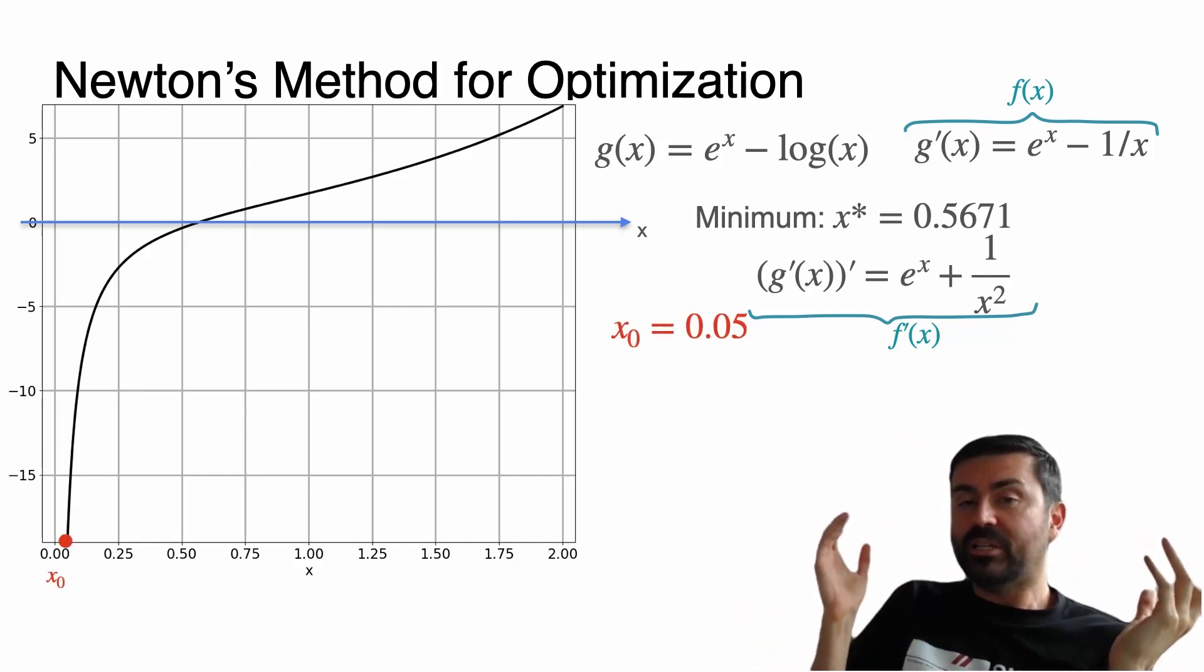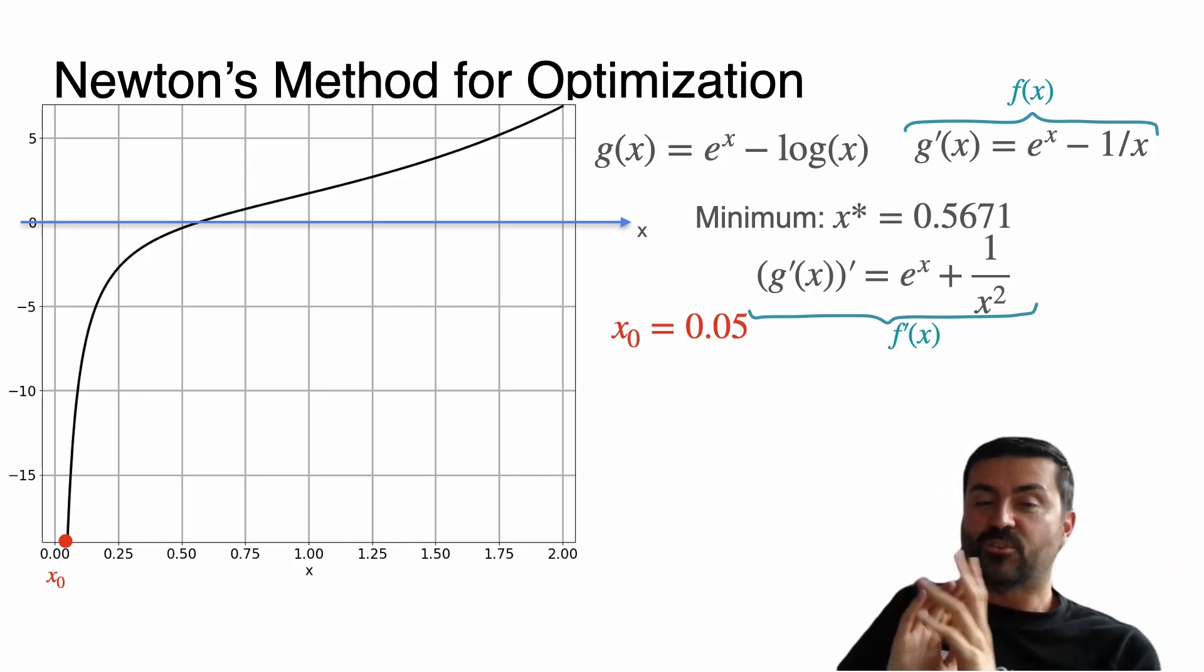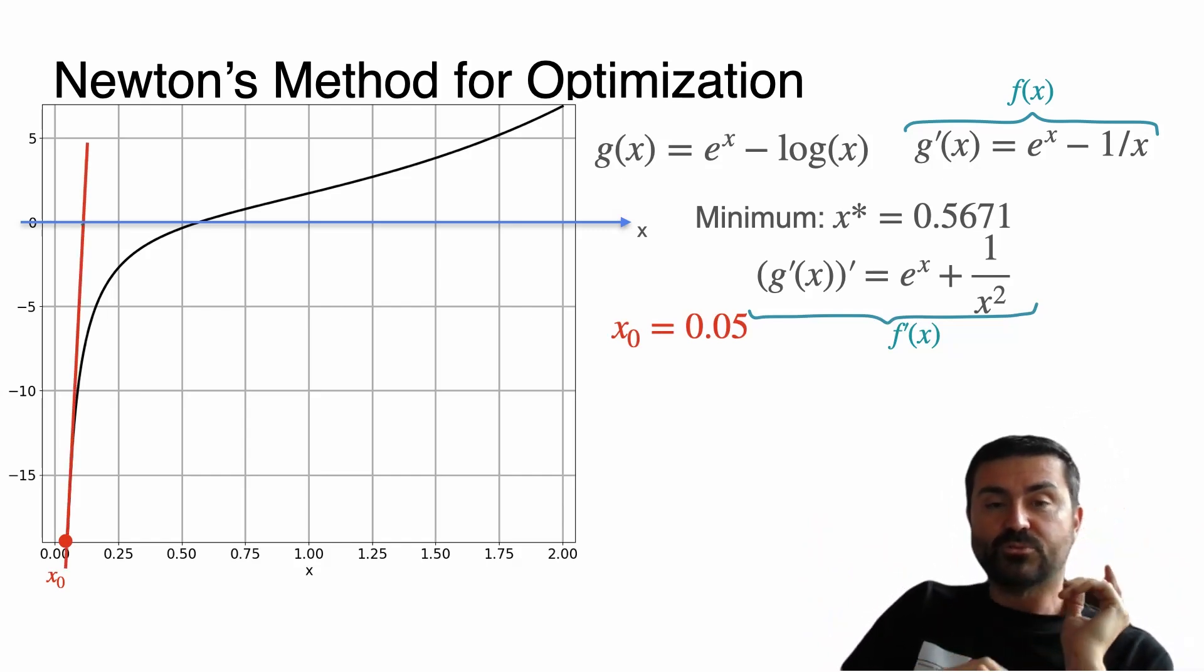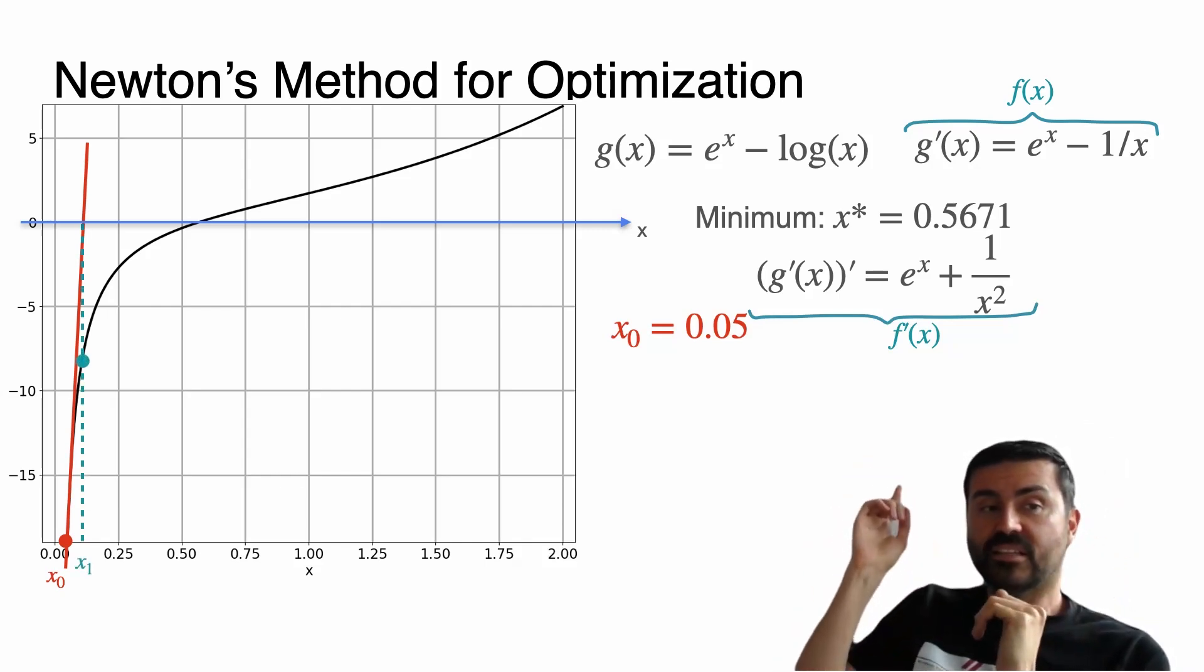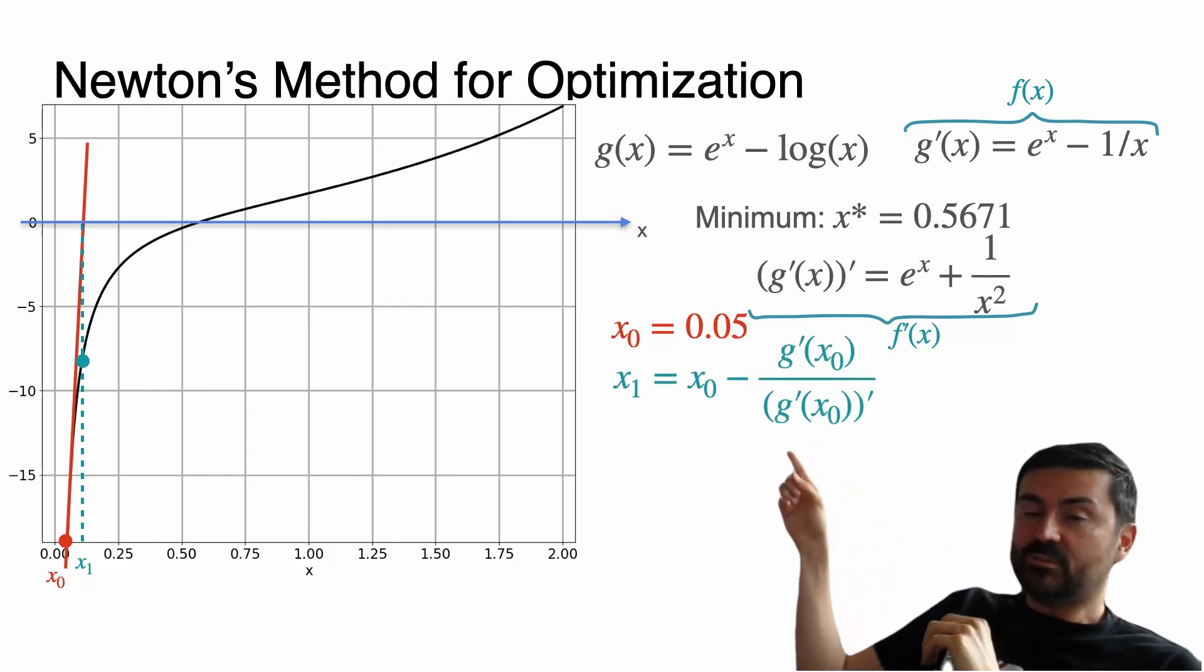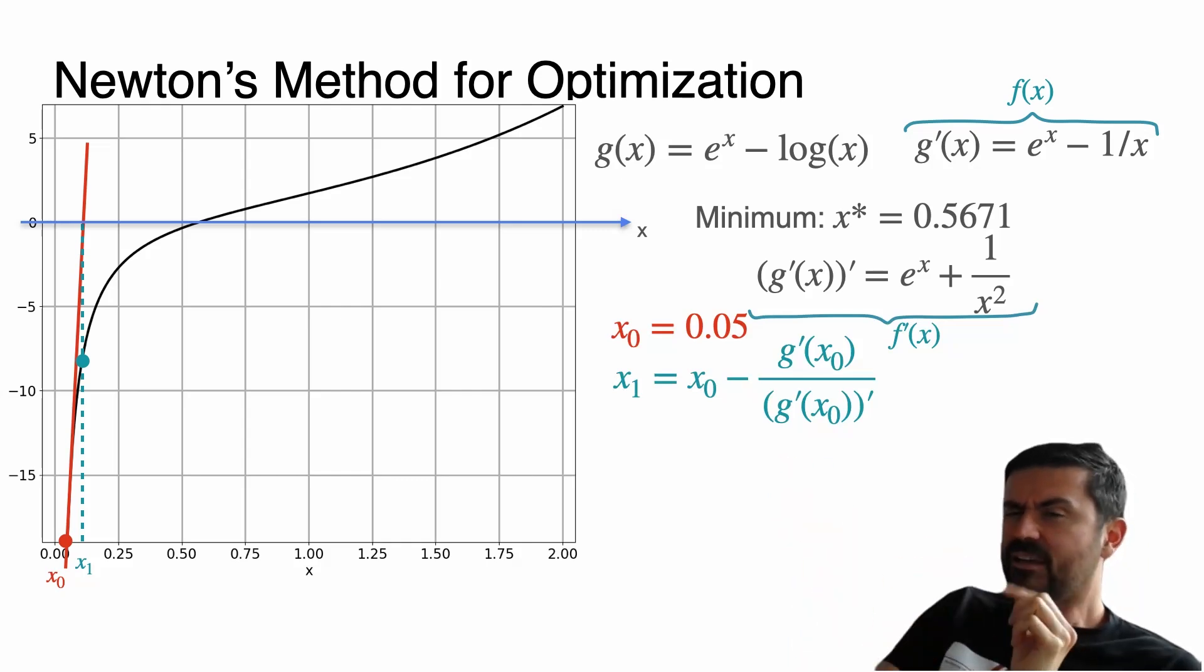So let's pick a random point. We're going to pick the point x₀ = 0.05, and that's this red point over here. And then we draw the tangent, which is this red line, and that tangent hits the horizontal axis at some point x₁. Now x₁ satisfies this equation: x₁ = x₀ - g'(x₀) / g''(x₀). Why?